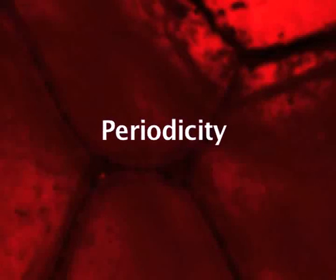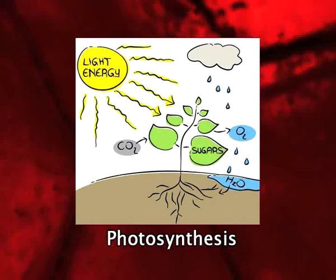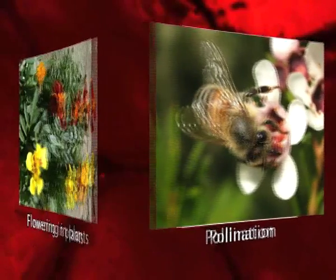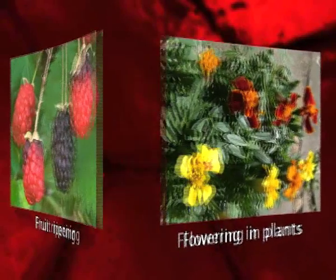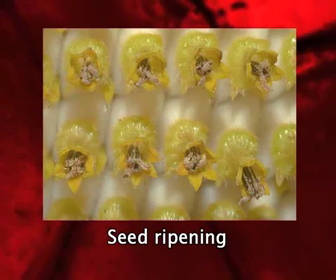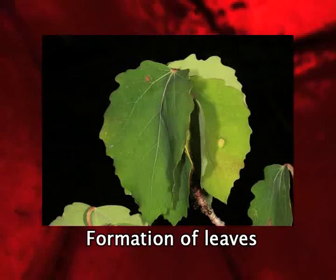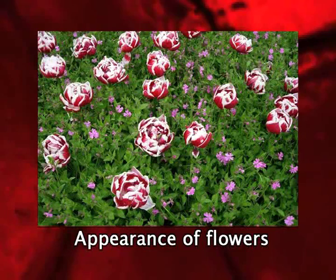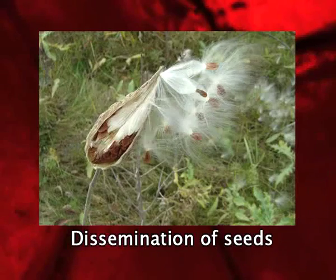Third is periodicity. Periodicity refers to the regular seasonal occurrence of various processes such as photosynthesis, growth, pollination, flowering, ripening of fruits, and ripening of seeds, and the manifestations of these processes such as formation of leaves, elongation of shoots, appearance of flowers, and dissemination of seeds.